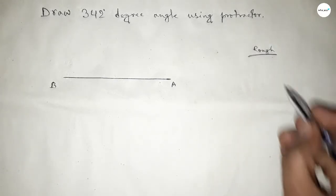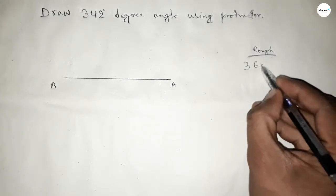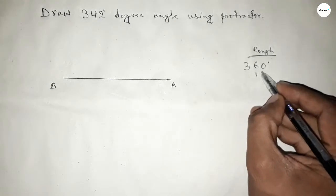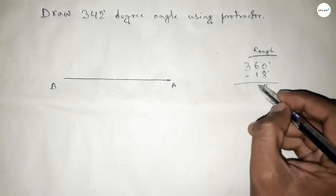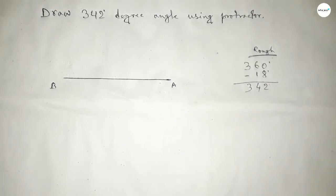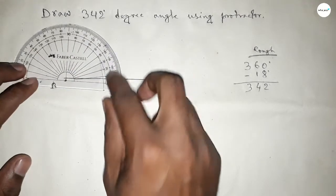If we subtract 18 degree angle from 360 degree angle, then we can get 342 degree angle. Now subtracting 18 degrees, so this is 2 degrees, carry 1, so 4, so 342 degree angle.